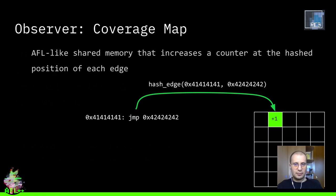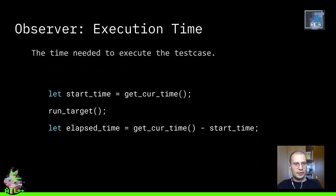A very straightforward example that you will surely know is the AFL coverage map observation channel — a map in shared memory that logs, in each bucket representing an edge in the control-flow graph, the number of executions of such edges in the current execution of the program. Another very simple observation channel, used by some fuzzers, is the execution time: when the test case is fed to the target and the target is run, the fuzzer measures time — typically in milliseconds — and knows for each test case how much time is needed to execute it.